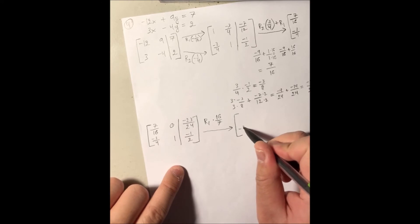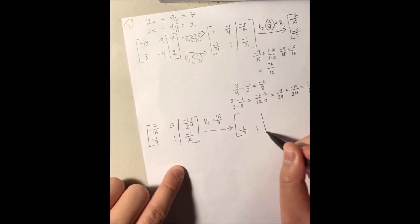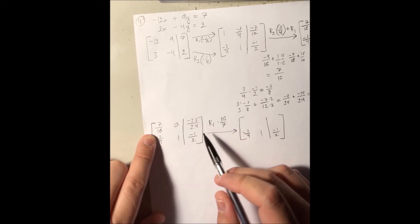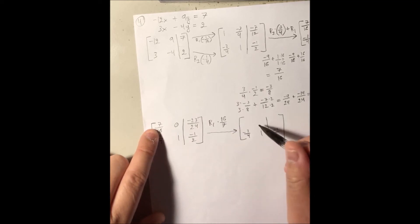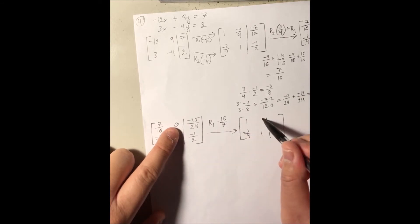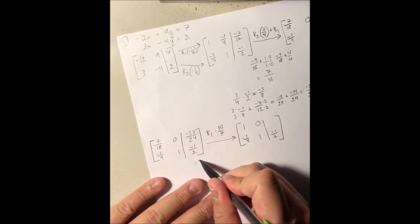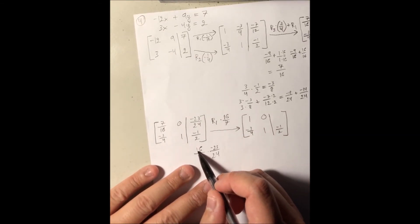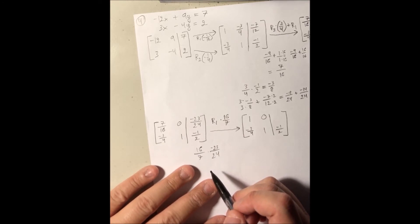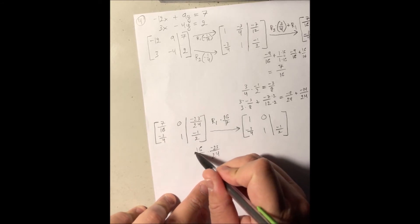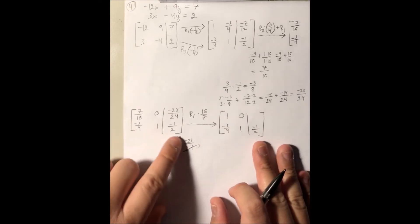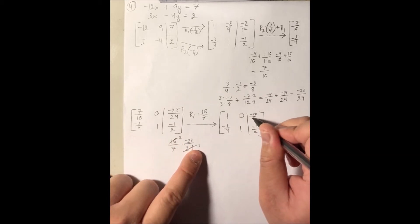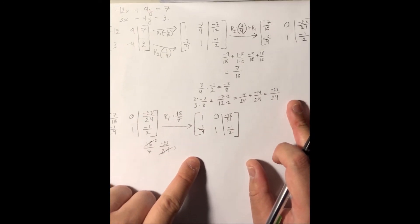Row 2 stays the same since we're not touching it. Row 1 changes: 16 over 7 times 7 over 16 is positive 1. 16 over 7 times 0 is 0. And 16 over 7 times negative 23 over 24 — since 16 and 24 share a common factor of 8, this simplifies: 16 divided by 8 is 2, 24 divided by 8 is 3, giving 2 times negative 23 over 7 times 3, which is negative 46 over 21.